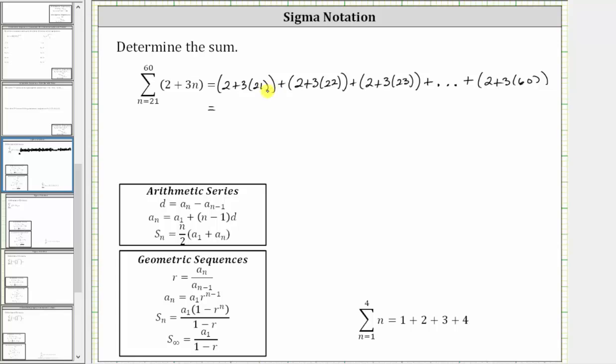Three times 21 is 63. Two plus 63 is 65 plus. Next we have three times 22 which is 66. Two plus 66 is 68 plus.